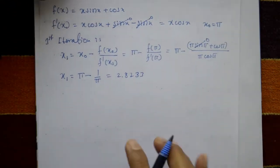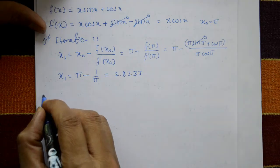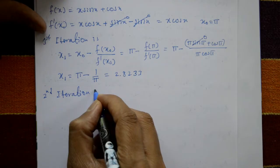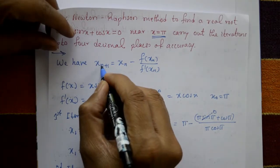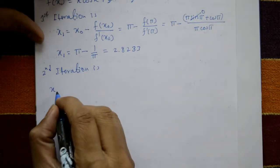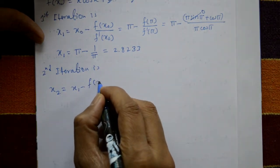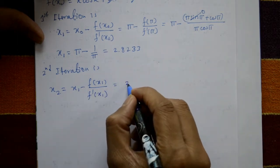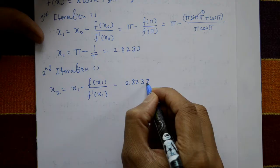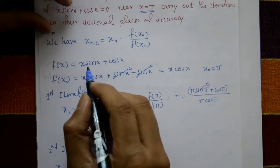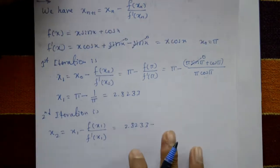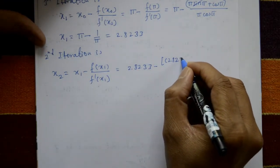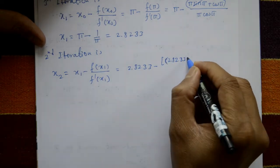Second iteration: put n = 1, so x₂ = x₁ − f(x₁) / f'(x₁). Using x₁ = 2.8233, we substitute into f(x): 2.8233·sin(2.8233) + cos(2.8233), divided by f'(x) = 2.8233·cos(2.8233).